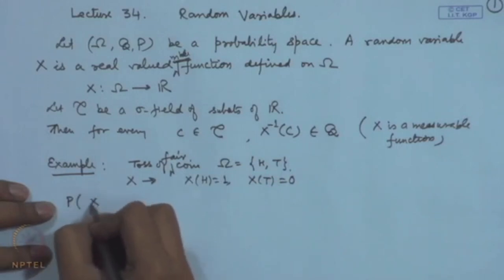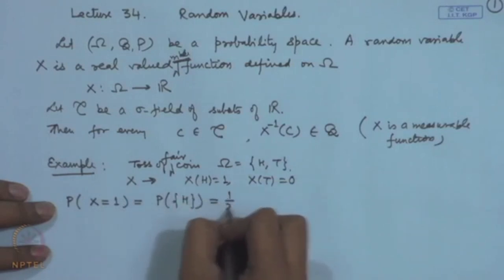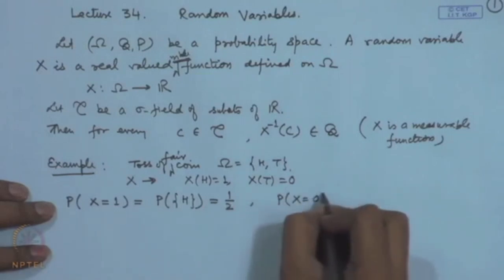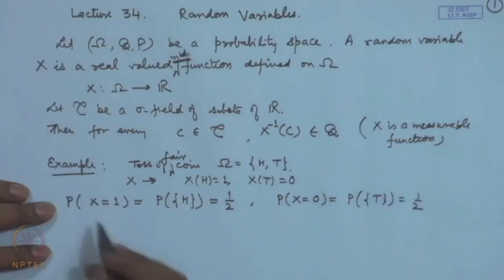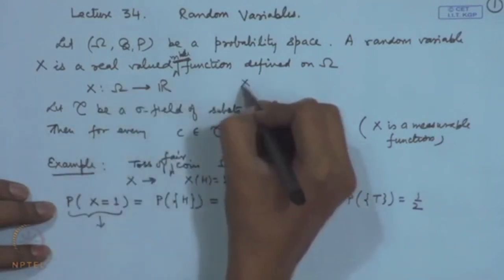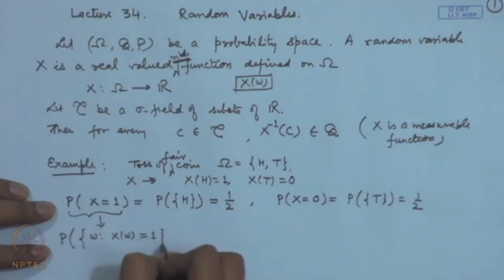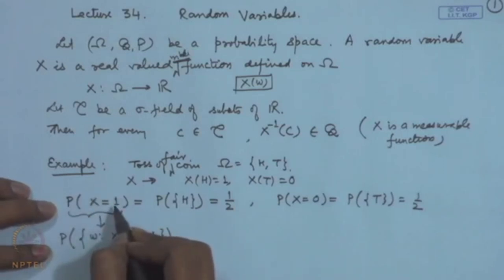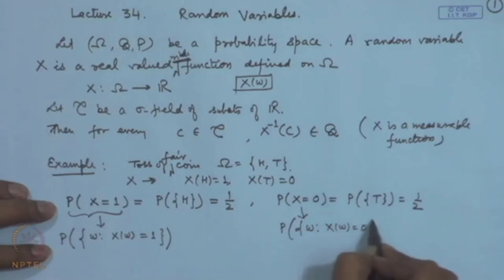Similarly, the probability that x = 0, which is the probability that a tail has occurred, is also 1/2. This description is actually more general — x is defined from Ω, so it has an argument x(ω). The probability that x = 1 is the probability of the set of all those ω for which x(ω) = 1, but for convenience we simply write P(x = 1). Similarly, P(x = 0) is the probability of all those ω such that x(ω) = 0.